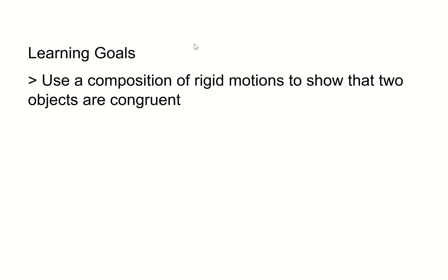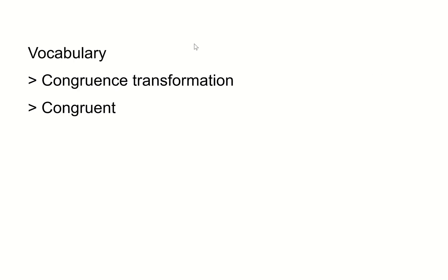Our goal is to be able to use a composition of rigid motions to show that two objects are congruent. We're going to need to know what a congruence transformation is and what it means for two or more figures to be congruent.